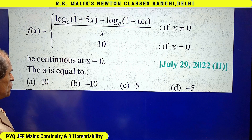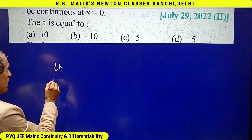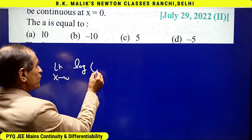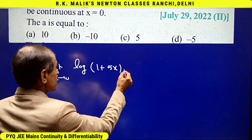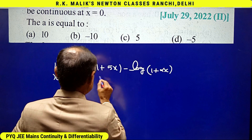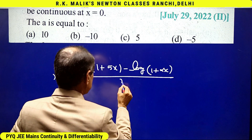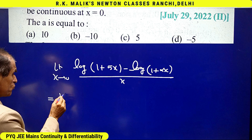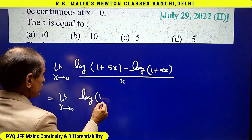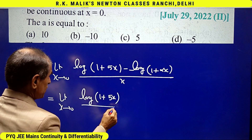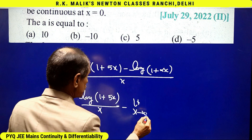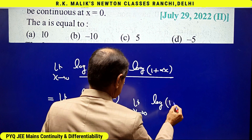Now let us find the limit as x tends to 0. The expression is: limit as x tends to 0 of [log(1 + 5x) − log(1 + αx)] / x. I have separated this into two limits: limit as x tends to 0 of log(1 + 5x) / x, minus limit as x tends to 0 of log(1 + αx) / x.